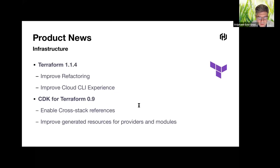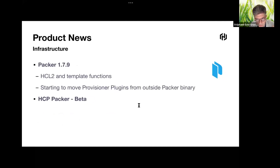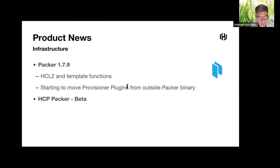Moving on to Packer — automating the build of your machine images. For the 1.7 branch, this branch enables support of HCL2 files as a stable definition to build images and implements template functions only for HCL2.